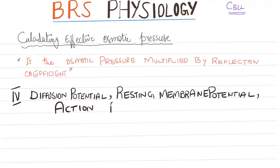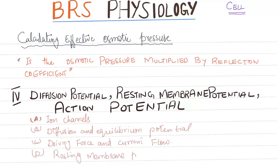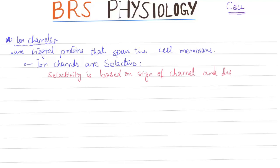Now, diffusion potential, resting membrane potential, and action potential. We will talk about ion channels, diffusion and equilibrium potential, driving force, current flow, resting membrane potential, and action potential. Ion channels are integral proteins that span the membrane. Ion channels are selective — selectivity is based on the size of the channel and the distribution of charges that line it.